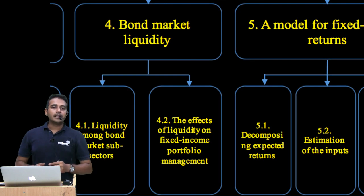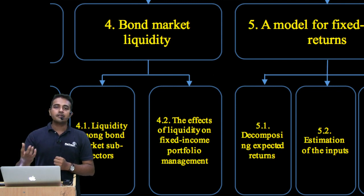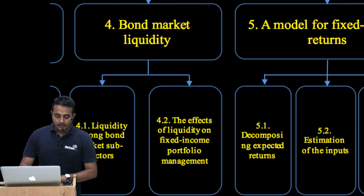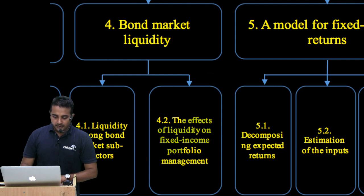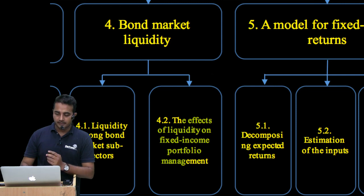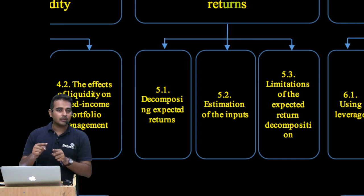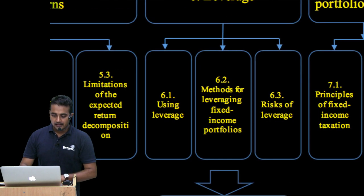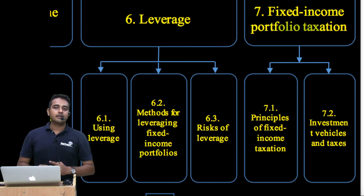Section four discusses liquidity — why bond market liquidity differs significantly from equity market liquidity. It covers liquidity among bond market subsectors: are corporate bonds more liquid or are treasuries more liquid? And the effects of liquidity on fixed income portfolio management — what decisions should a fund manager take depending on investment horizon and liquidity preference. Section five is a model for returns, where we learn to decompose returns — some mathematics we'll be doing there. Section six is about leverage, where we'll learn to do some calculations. Section seven has a discussion on taxation.